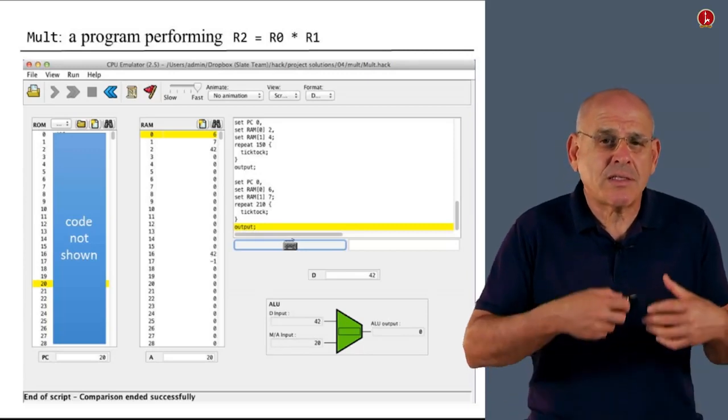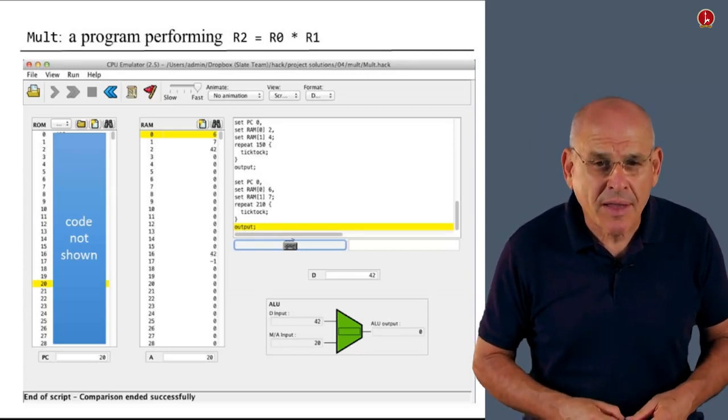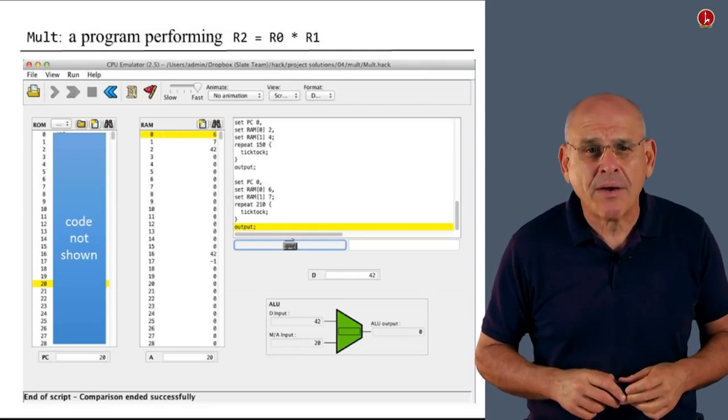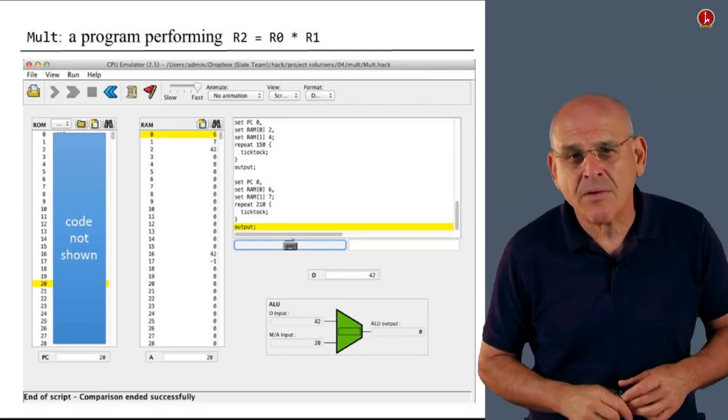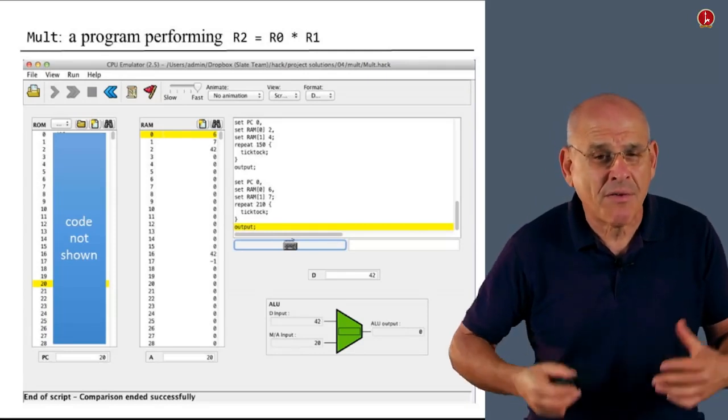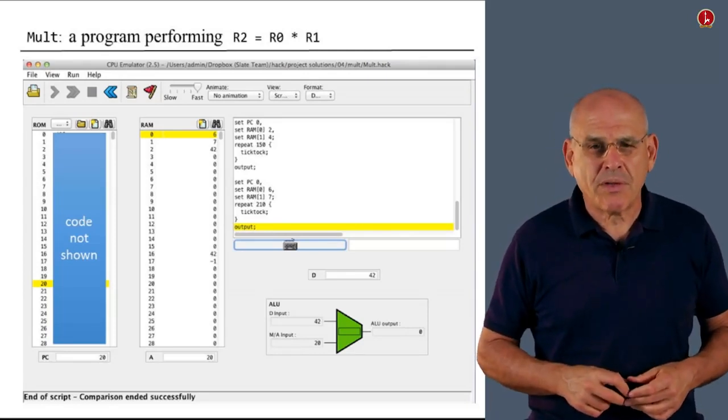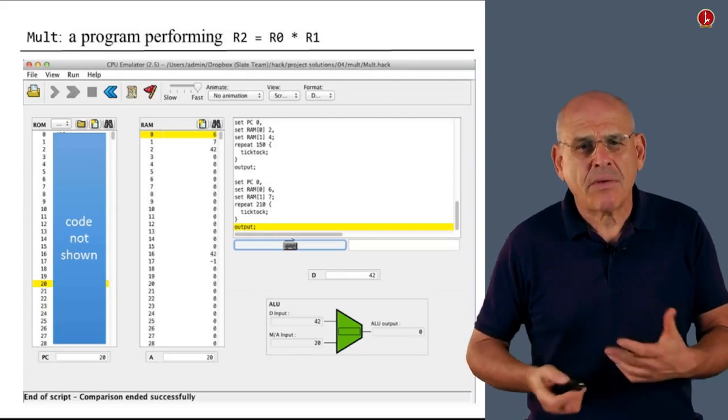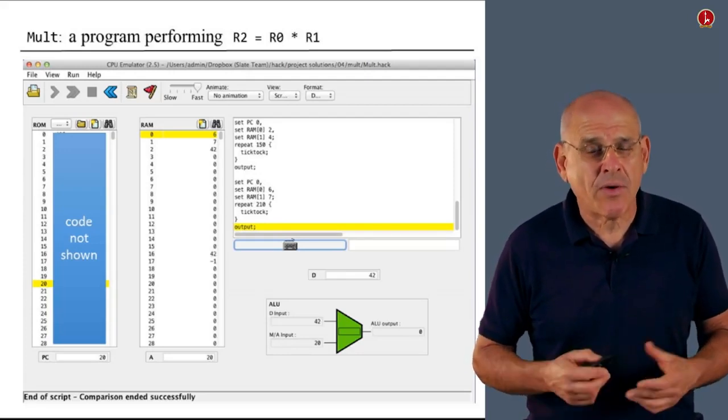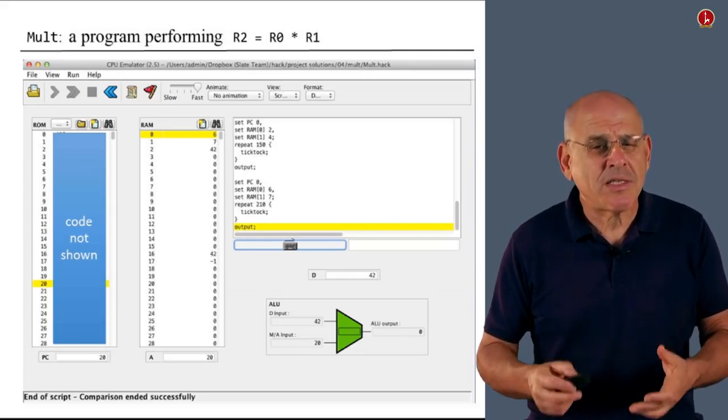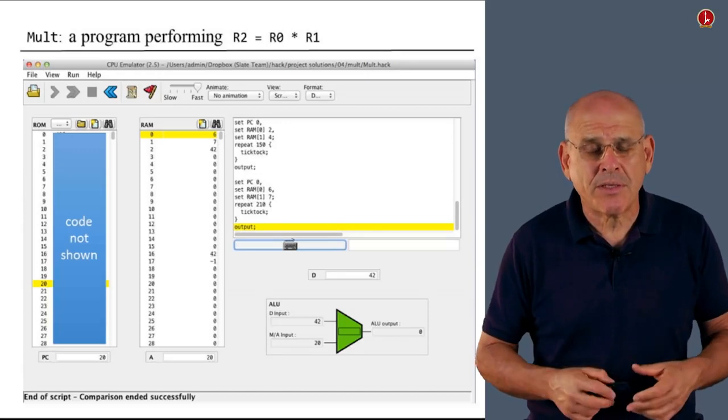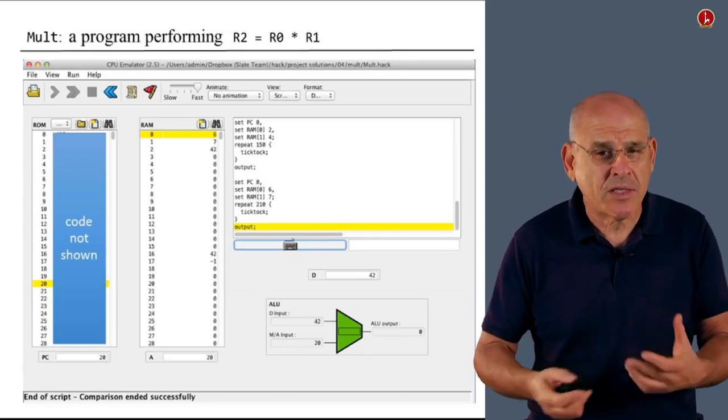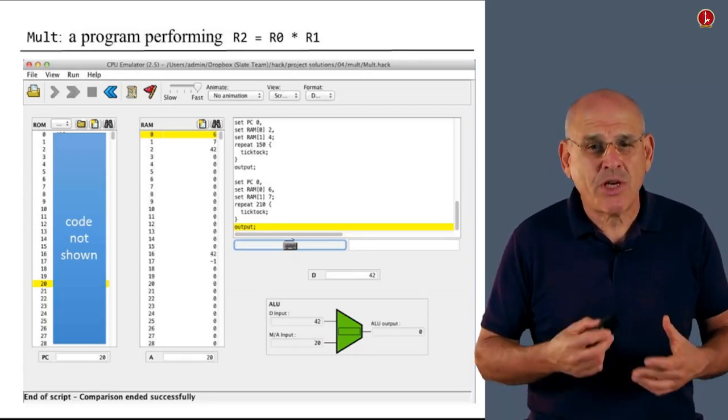So the assumption is that once the user has loaded this program into the instruction memory, the user also places two numbers in RAM 0 and RAM 1, clicks the go button or the play button, starts praying. And if everything works nicely, the program will compute the product of these two numbers. On the right-hand side in the screen area, we see a script that we supply together with this project, and the script is designed to test the program using some pairs of numbers that we made up.